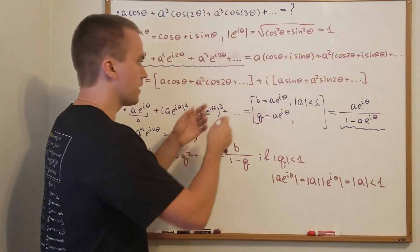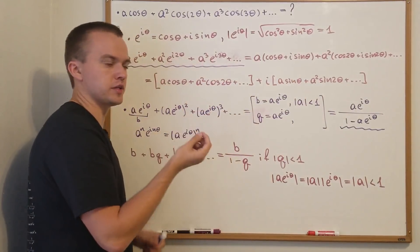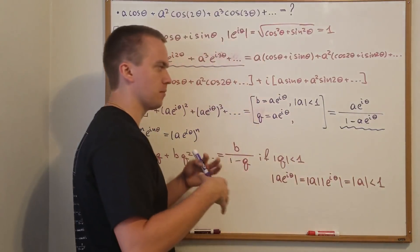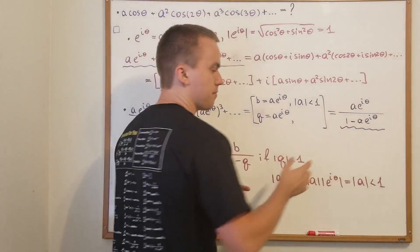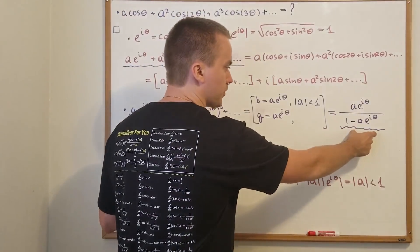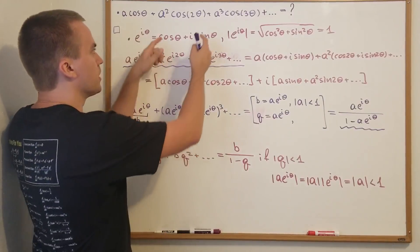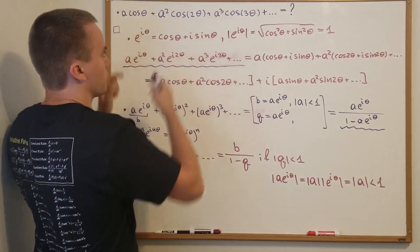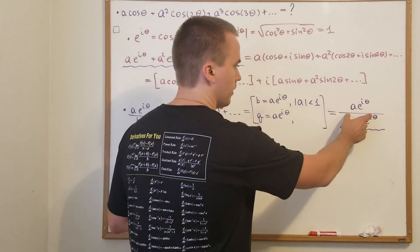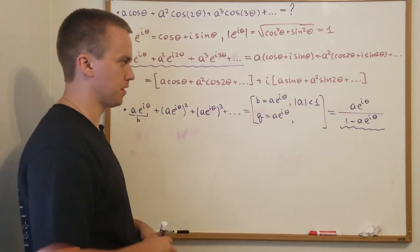In this expression we have real and imaginary parts, and we are interested in the real part. We're going to do some algebra to separate the real part and the imaginary part. The real part of this expression is going to be exactly the answer — the sum of our original series.